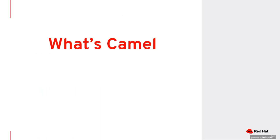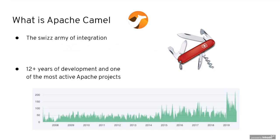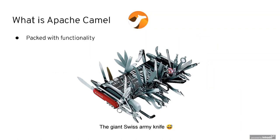So what is CAMEL? CAMEL is an integration framework — it's the Swiss Army knife of integration. It's also one of the most active and developed products at the Apache Software Foundation. It's been around for 12 years, and it comes with a lot of functionality, so you can picture it as more like a giant Swiss Army knife.